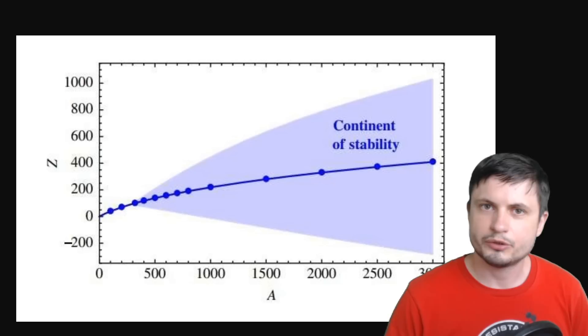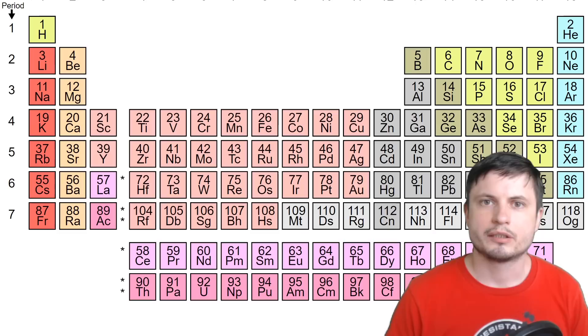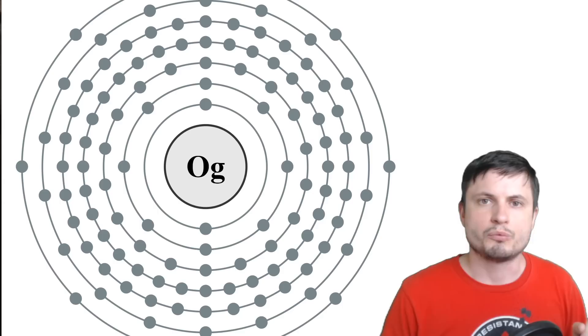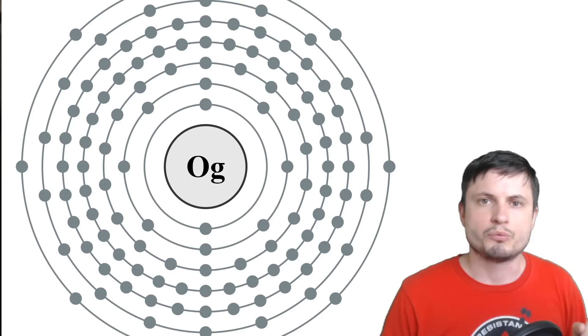At certain points, when an atom gets to really large atomic masses, here we're talking about going beyond the periodic table to mass numbers of about 300 or actually more specifically 315,